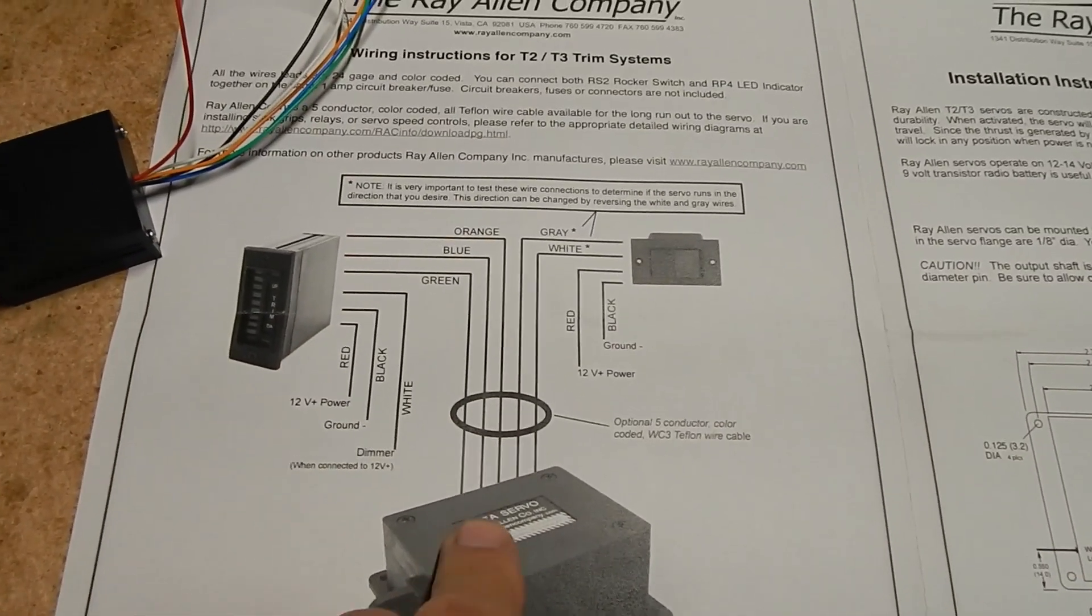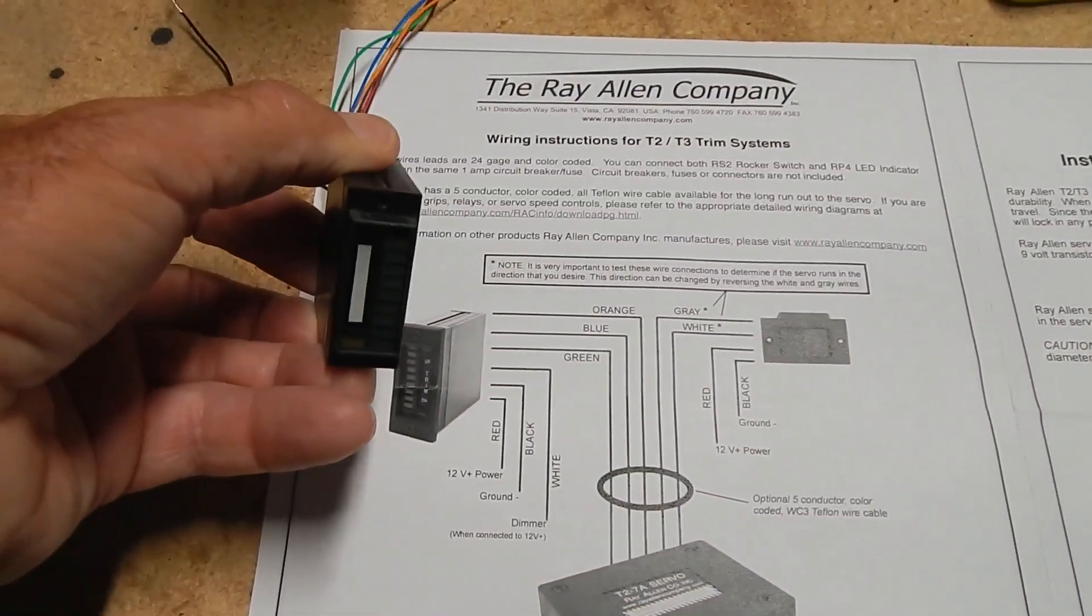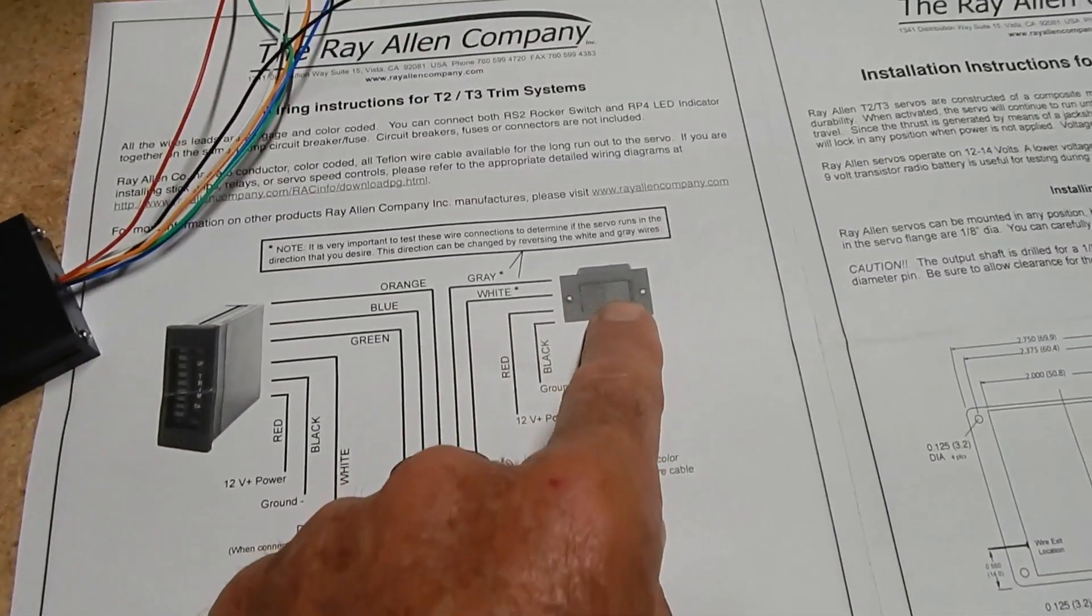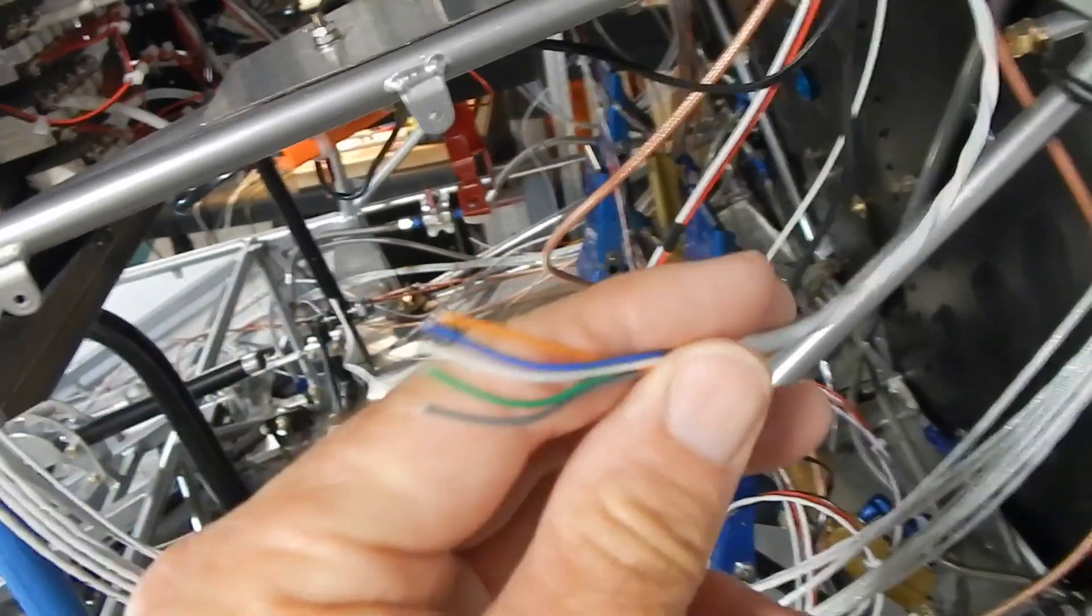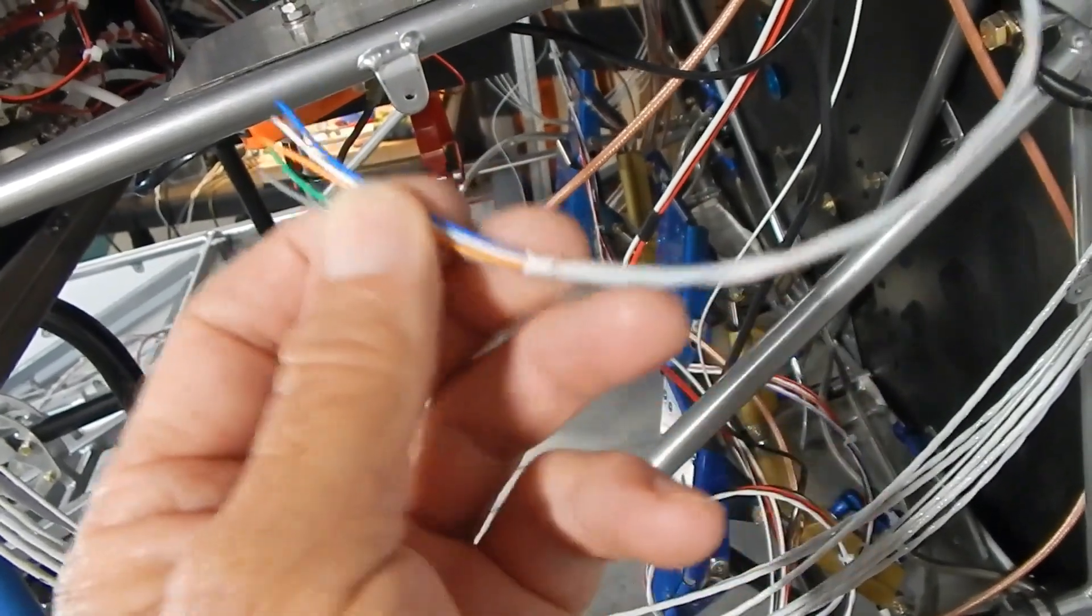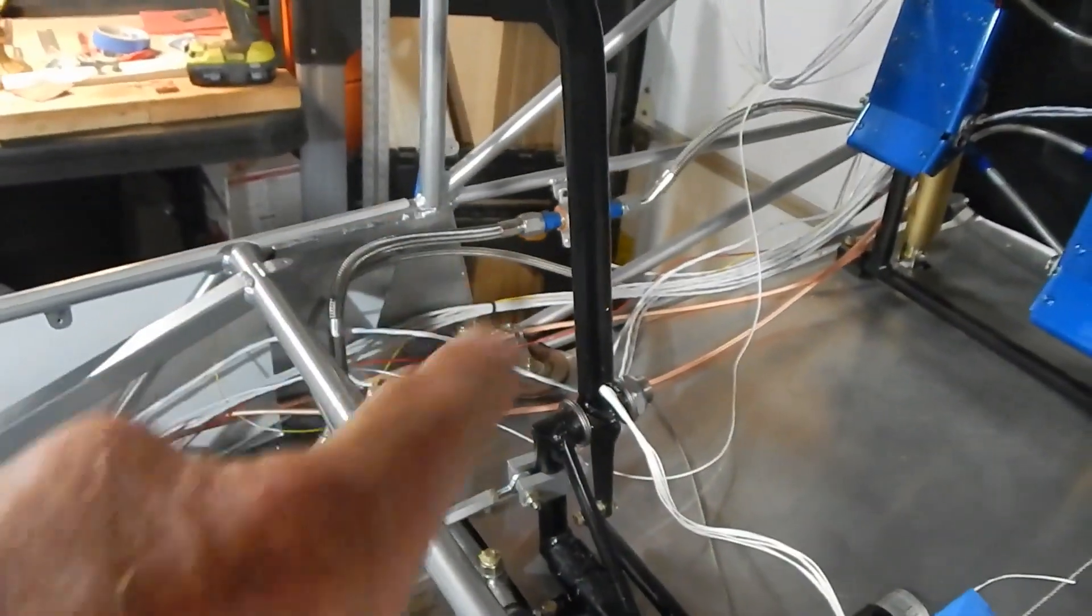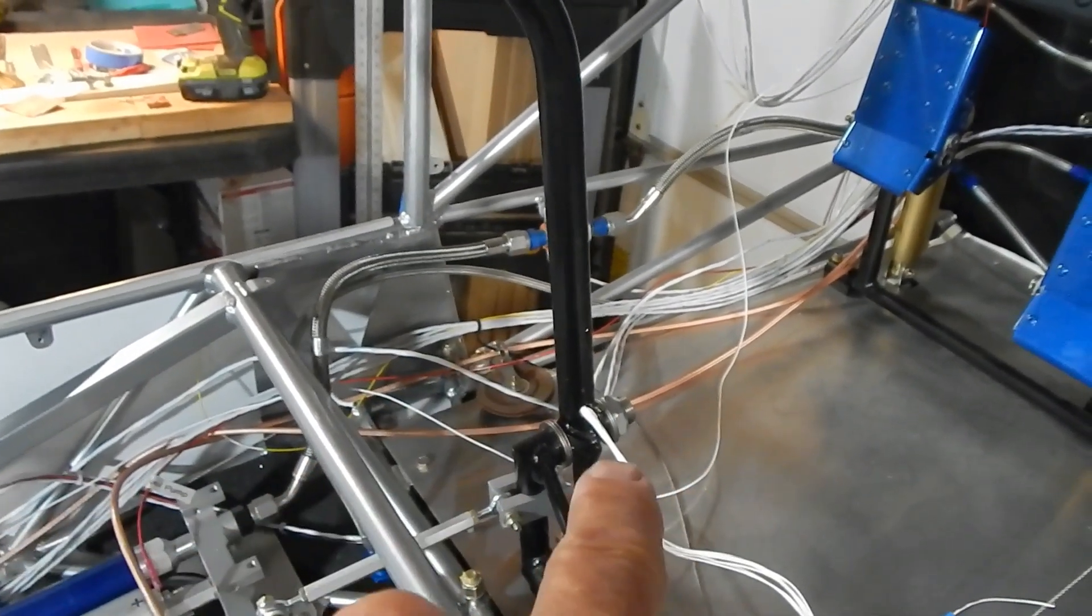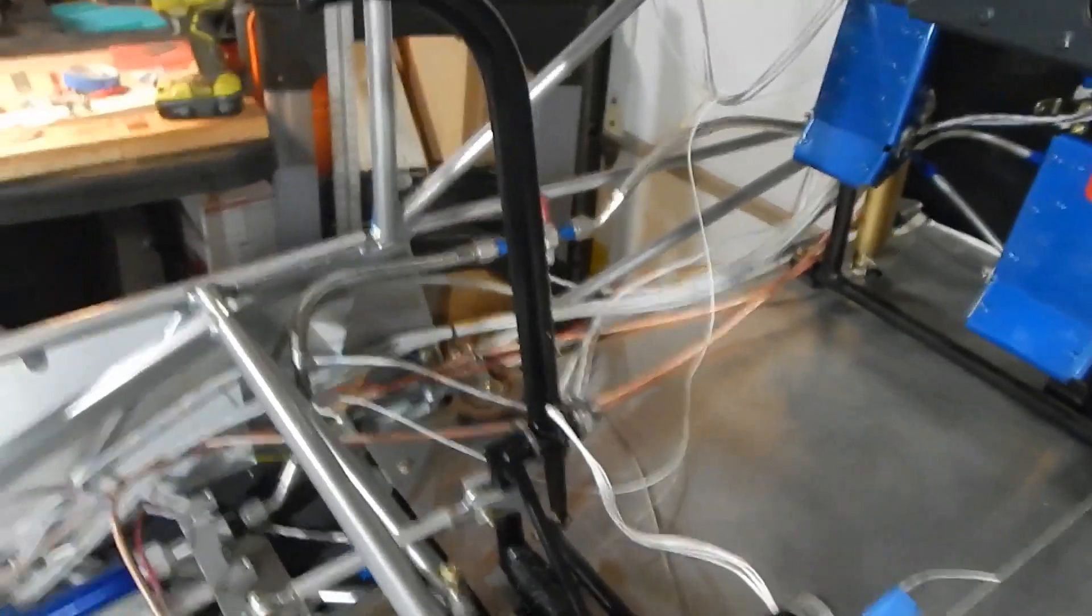On this trim servo indicator and servo, I think I've got this figured out. It looks like the orange, blue, and green come up to my indicator, and the gray and white go to the switch - the trim switch which is actually in my control stick. Here is the wire coming back from the servo from the tail. My gray and white - everything connects to the indicator except the gray and the white, which if I follow this back, it looks like I've got to cut it off somewhere back here and hook up to my control stick. The other three come all the way through to my indicator.